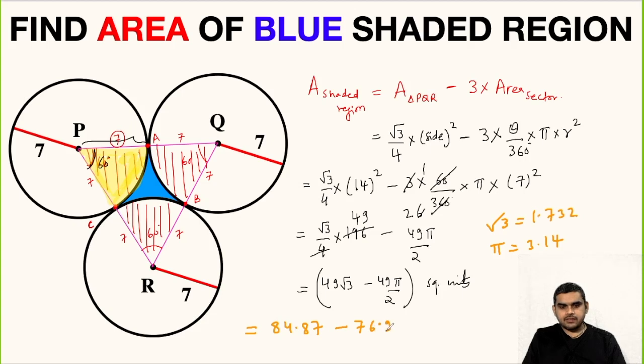If we subtract this, we will get the area of this blue shaded region as 7.91 square units.